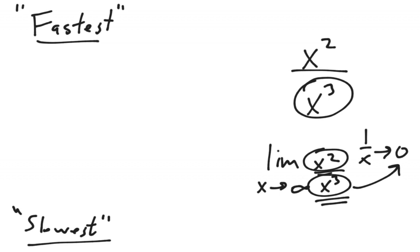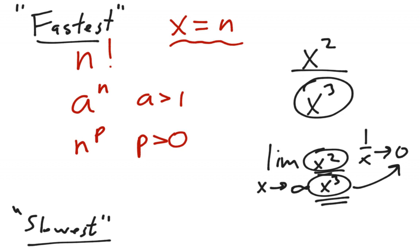So here are the fastest to slowest types of functions. The fastest type of function we'll look at is the factorial function. Then we have exponential functions, a to the n. And in this video, n and x are basically going to be our independent variables. So a to the n, where a is bigger than 1. We have algebraic functions, or polynomial functions, n to the p, where p is a power or an exponent that's bigger than 0. And then the slowest growing function we'll look at is the natural log of n. And clearly here n has to be positive for the natural log to work out. But these are fastest to slowest growing functions.